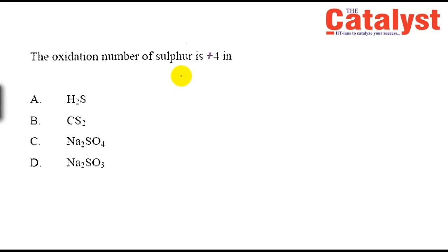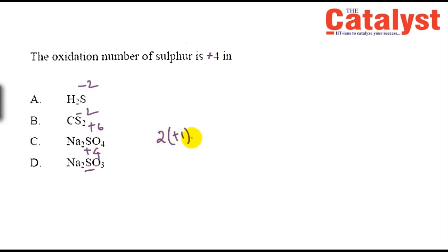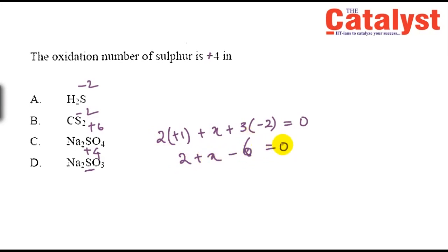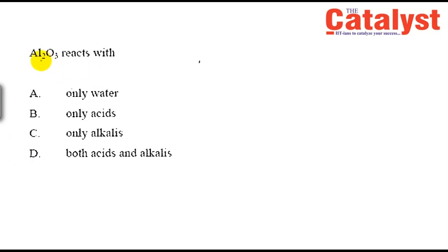The next question asks for the oxidation number of sulfur as +4. In H2S, sulfur is −2; in CH2 (thiol), sulfur is −2; in Na2SO4, sulfur is +6. For sodium sulfite (Na2SO3): 2(+1) + X + 3(−2) = 0, giving 2 + X − 6 = 0, so X = +4. The answer is Na2SO3, sodium sulfite.